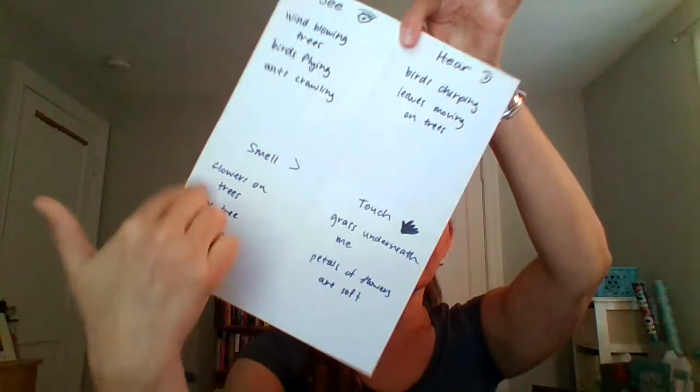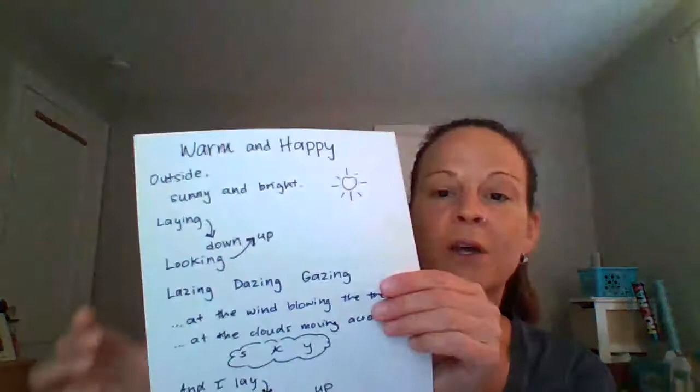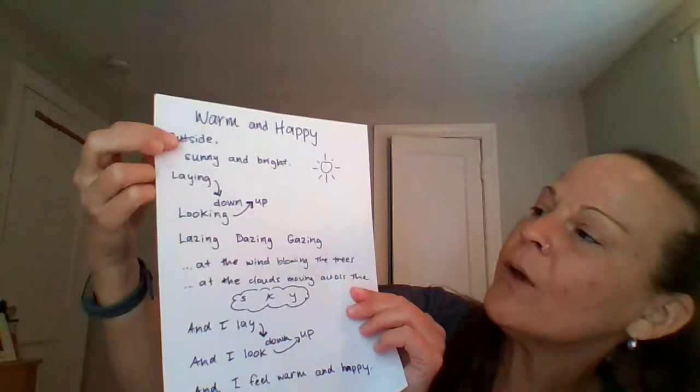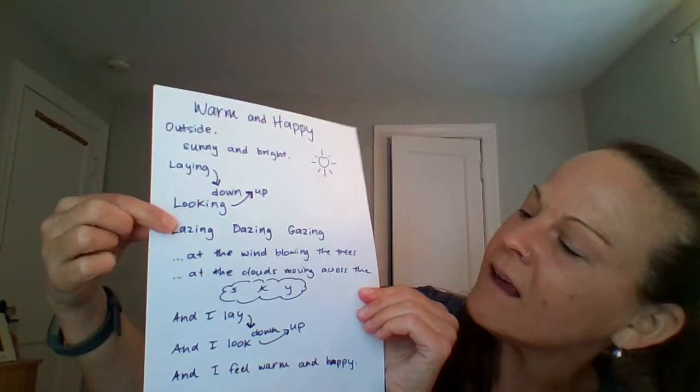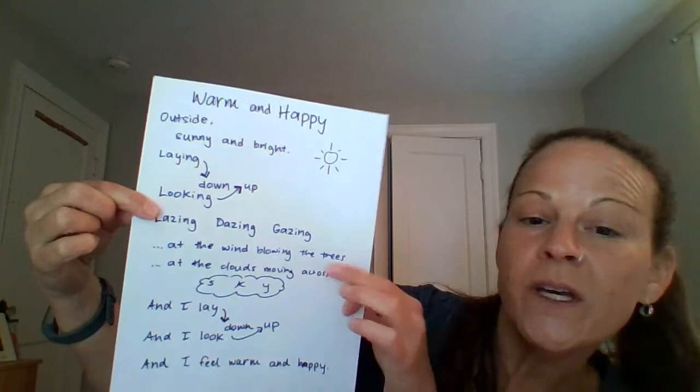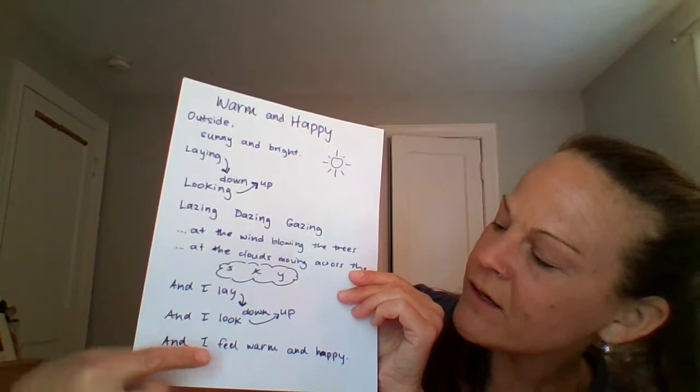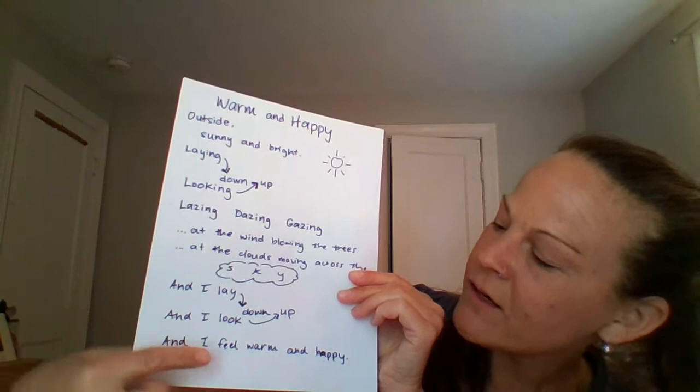Last thing — if you want to try writing some poetry this week, I would love to see it. I took my activity from using my senses. We used four of our five senses and then I wrote a poem using my ideas from that. Remember, there are no rules. My poem is called 'Warm and Happy.' Outside, sunny and bright, laying down looking up, lazing, dazing, gazing at the wind blowing the trees, at the clouds moving across the sky, and I lay down and I look up and I feel warm and happy. That's something Miss Pedersen wrote — I tried to use my senses to describe how I was feeling.